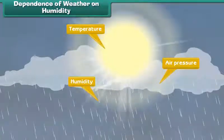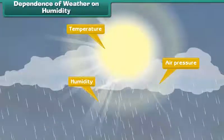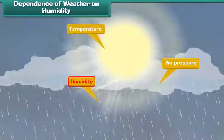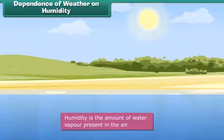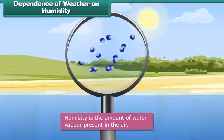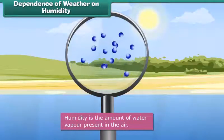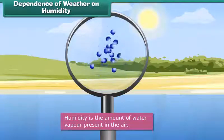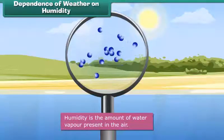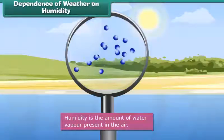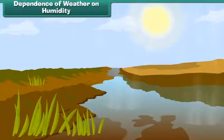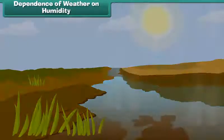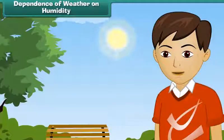Another important factor influencing weather is humidity. Humidity is the amount of water vapor present in the air. Yes, the air around us is full of water. You can usually see the water evaporates from lakes, oceans, rivers, and even from the trees.